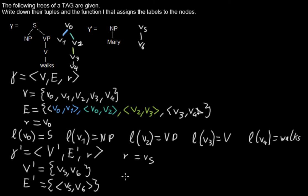And now we need the label function. And the label of V5 is, as you can see here, it's NP. And the label of V6, it's Mary.